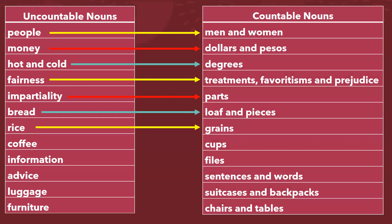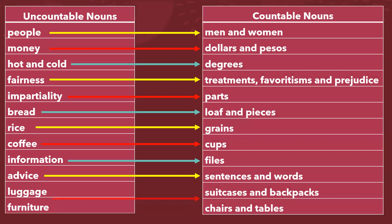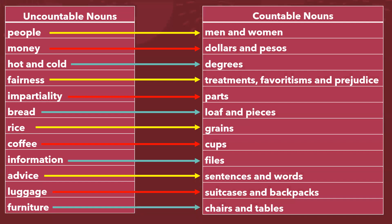Rice? Well, we can count the grains — it's difficult, but we can do it. Coffee? We can say cups. Information? We can count the files. The advice? We can count sentences and words. The luggage? Well, suitcases and backpacks. Furniture — chairs and tables.